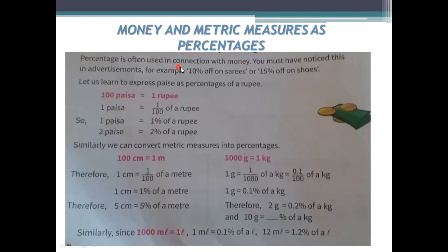Next: money and metric measures as percentages. Percentages are often used with money — for example, 10 percent offer on saris or 15 percent offer on shoes. We know that 100 paisa equals one rupee, so one paisa equals 1 by 100 of a rupee, meaning one paisa equals one percent of a rupee and two paisa equals two percent of a rupee.